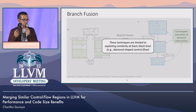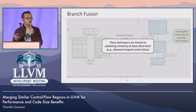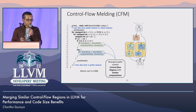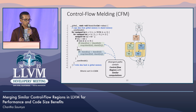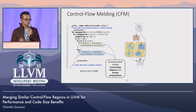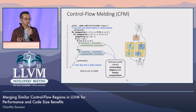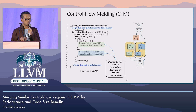However, most of these techniques only look at similarity at the basic block level. What about control flow regions? To exploit this opportunity, we propose a new transformation called control flow melding, or CFM. The idea is to look at isomorphic control flow regions with similar computations inside, and try to merge them in order to reduce code size or reduce control flow divergence in GPU programs.